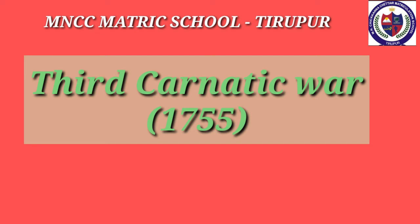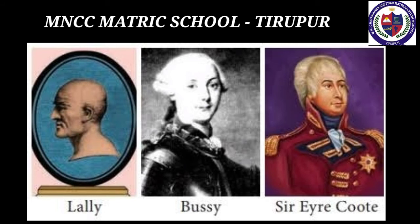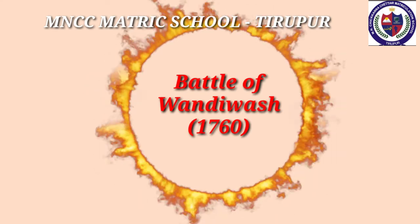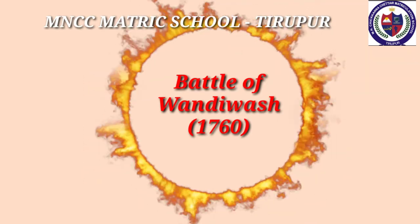The outbreak of the Seven Years' War in Europe led to the Third Carnatic War in India. By this time, Robert Clive had established British power in Bengal. Count Lally was deputed from France to conduct the war from the French side. He easily captured Fort St. David and ordered Bussy to come down to the Carnatic with his army. Taking advantage of Bussy's departure, Robert Clive sent Colonel Forde from Bengal to occupy the Northern Circars.